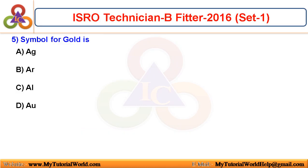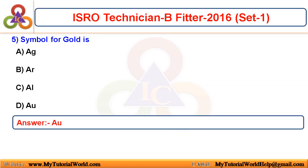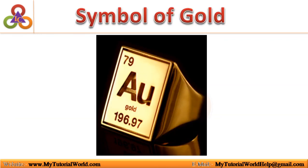Symbol for gold is? Gold is indicated with the symbol AU. So, gold — its symbol is AU.